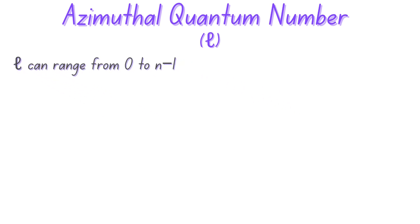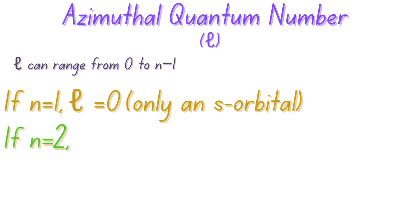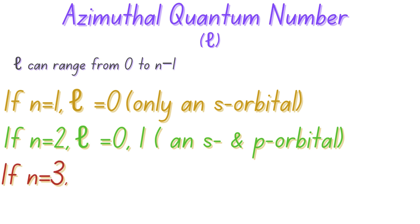Let's look at some examples. If n is equal to one, that means l will be equal to zero. That means we will have only an s orbital. If n is equal to two, l will be equal to zero or one. So we'll have an s orbital and a p orbital. If n is equal to three, l will be equal to zero, one, or two. So the orbitals will be s, p, and d.